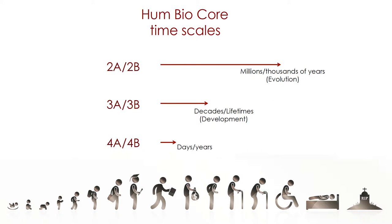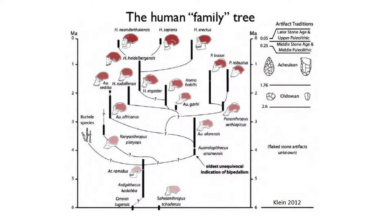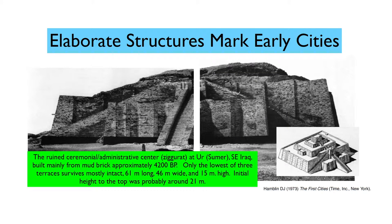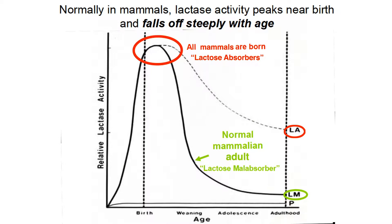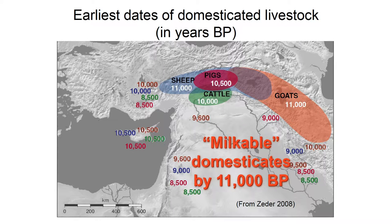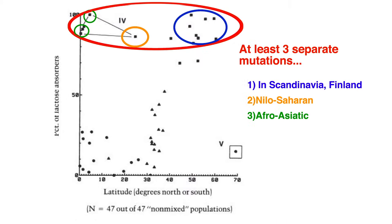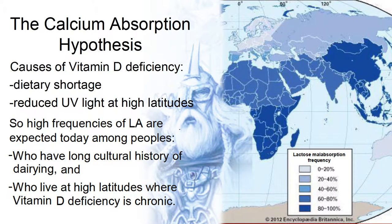The fall HumBioCore takes an evolutionary perspective on the origin of human beings and the development of societies, while providing an introduction to genetics and ecology. In his first lecture, Professor Durham asks why, if most adults cannot absorb lactose, would humans in dairying cultures have evolved this capacity, unique among mammals?